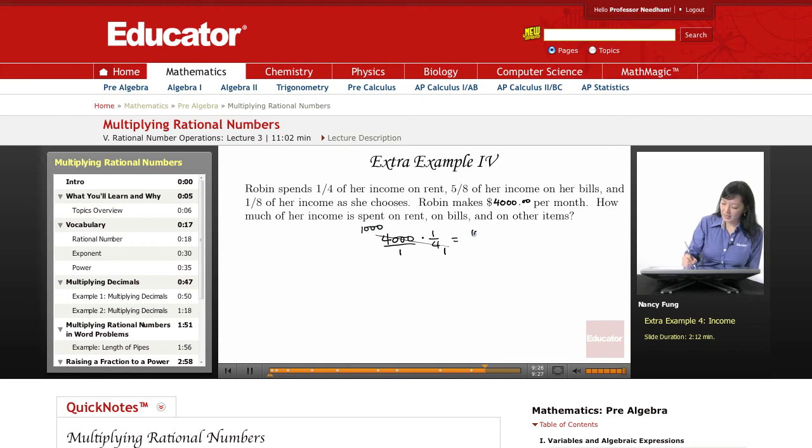1,000 times 1 is 1,000, and 1 times 1 is 1. Simplifying, we see that she spends $1,000 on rent.